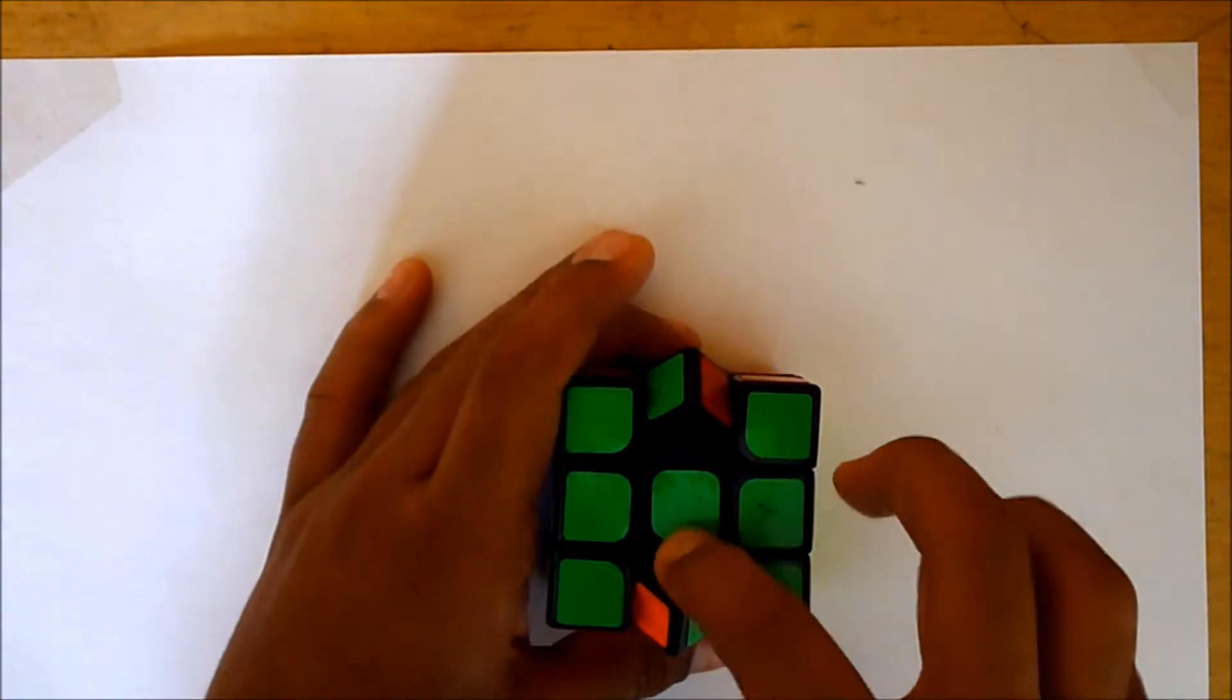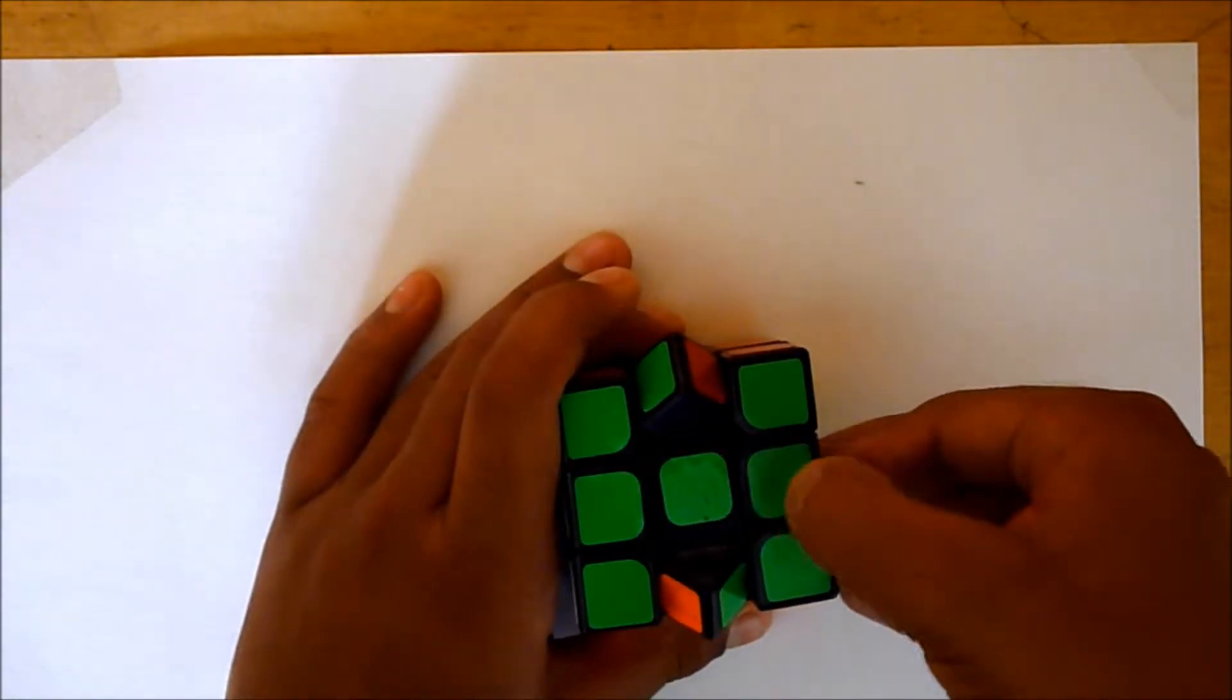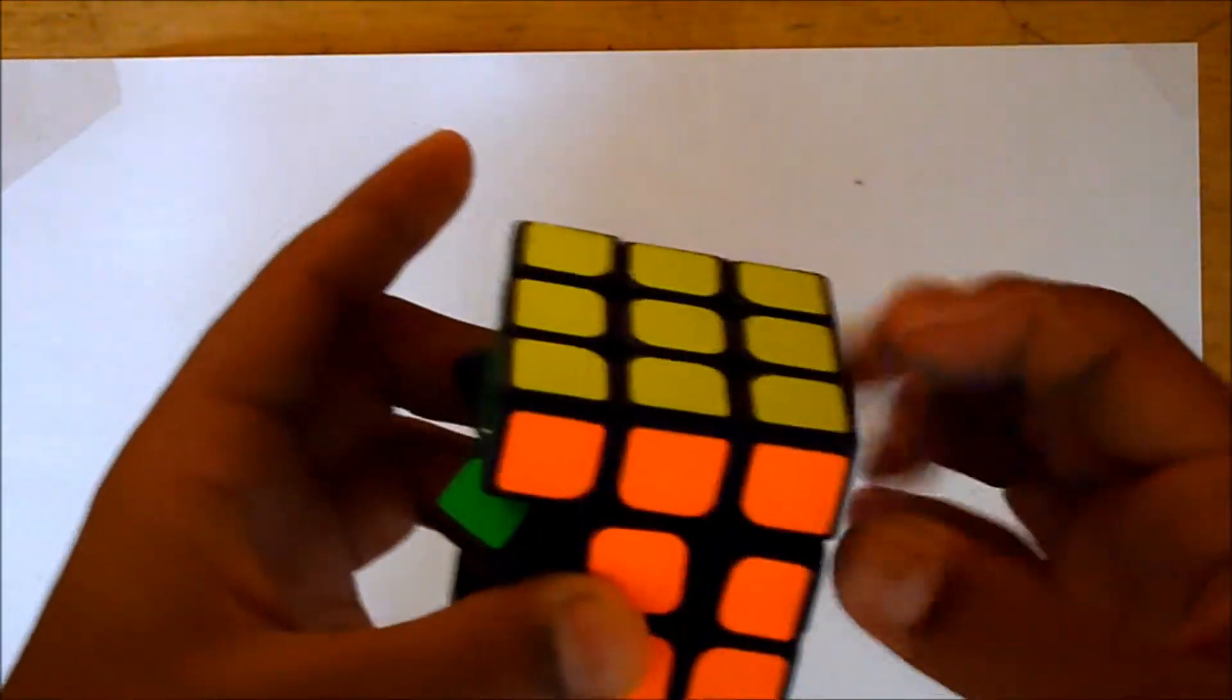So I made this by myself using a YJ Guanlong. Because Guanlong is a cheap cube and it's smooth. I don't want to use something really good like an Aolong because it's costlier.